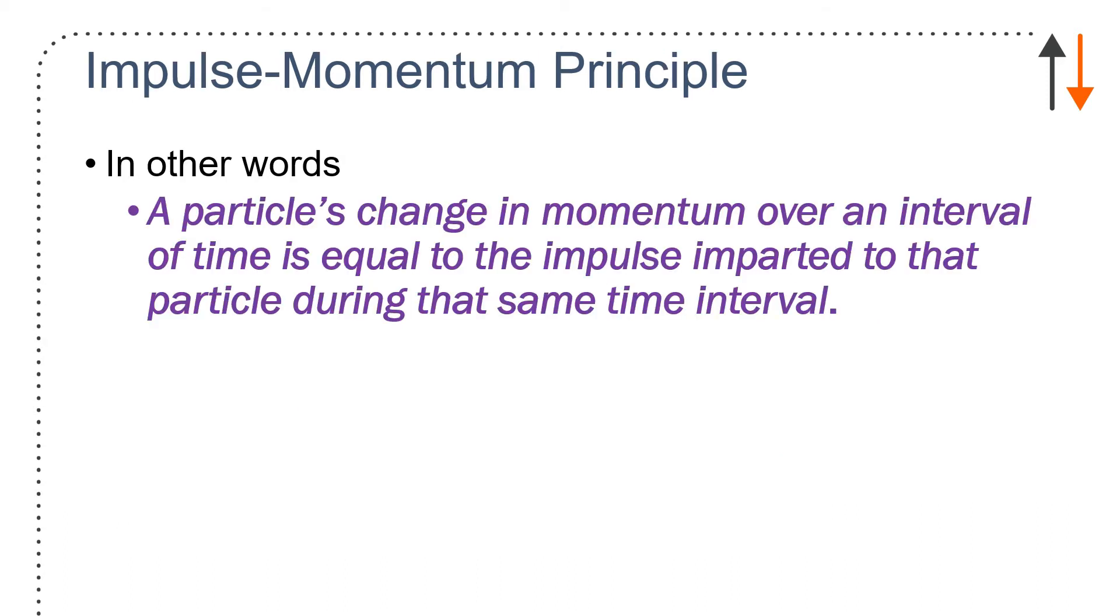A particle's change in momentum over an interval of time is equal to the impulse imparted to that particle during the same time interval. So when you look at the text and numerous texts, dynamics authors either play baseball or golf and often look at hitting balls for very short periods of time. And that's actually a really great way to talk about momentum.